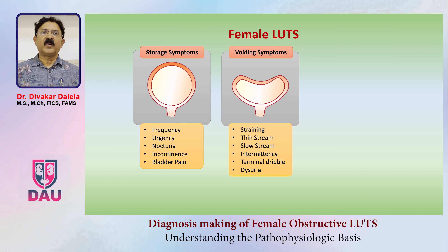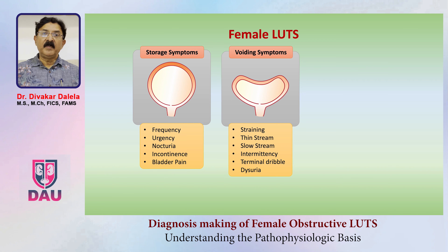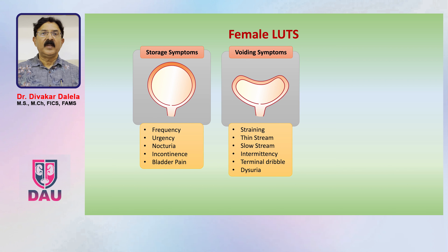The other set of symptoms are called voiding symptoms, which include straining while passing urine, noticing thinning of the urinary stream or decrease in the force of the urinary stream — known as slow stream — or intermittency of the stream. In some patients, terminal dribbling and even pain while passing urine, the dysuria.